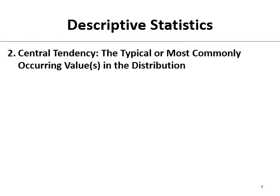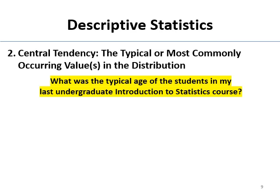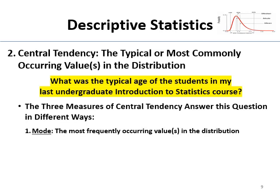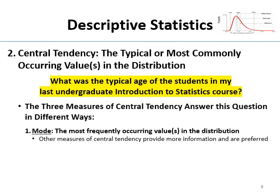The next thing we need to know to interpret grandma's score is central tendency — what's the common score in the distribution, or the most commonly occurring score. What was the typical age of students in my final intro to stats class? There are three different measures of central tendency. The mode is the most frequently occurring value in the distribution — for my ages, it would be the age that occurred most frequently. The other measures do more with the data than the mode, since the mode doesn't take into account the magnitude of differences — it just tells you the most frequently occurring value.